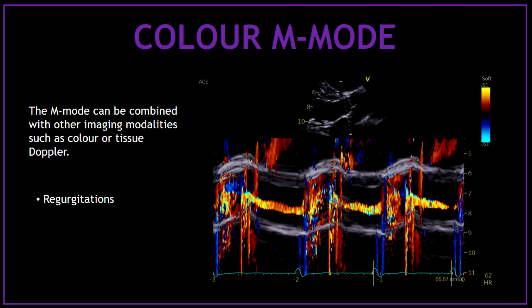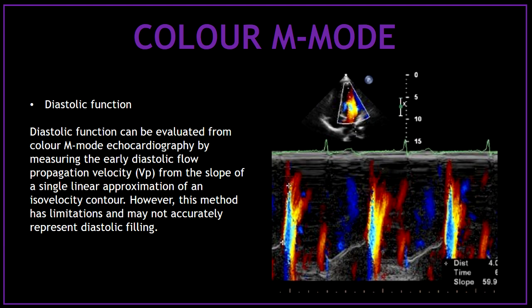What is color M-mode? The M-mode can be combined with other imaging modalities such as color or tissue Doppler. This is often used to assess regurgitations, and is basically using the color Doppler option on top of the M-mode tool. We can also use the color M-mode to assess the diastolic function by measuring the early diastolic flow propagation velocity. However, this method has limitations and may not accurately represent diastolic filling.